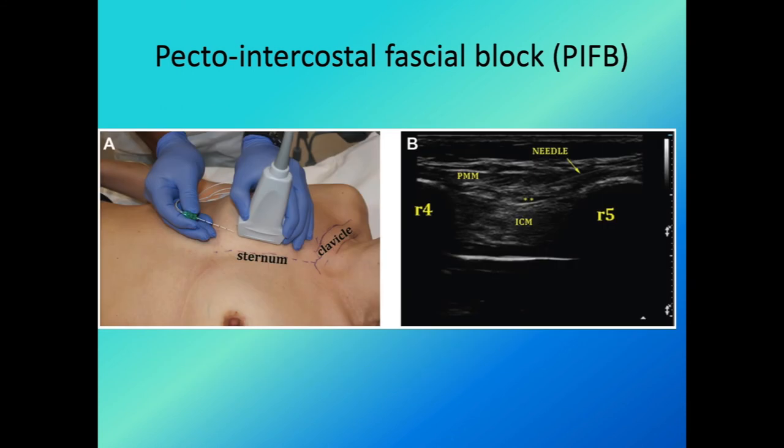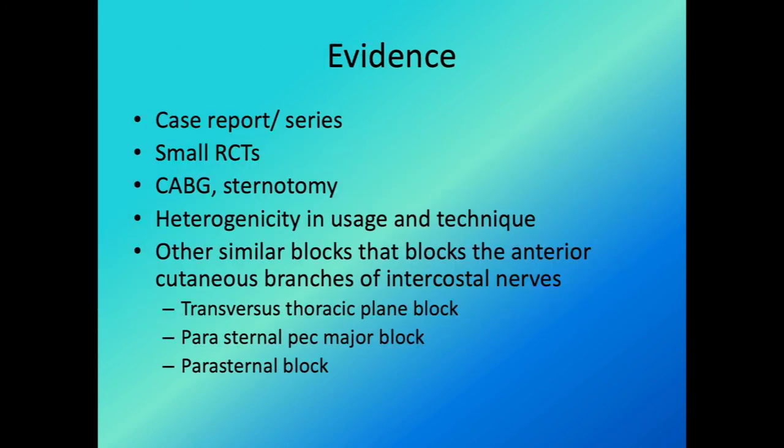The needle tip is placed between the pec major and the intercostal muscle. There is no strong evidence, but theoretically since the nerve runs through that area it should be a relatively simple and safe block. It can be considered as part of a multimodal strategy for CABG and sternotomy, though the extent of its clinical impact on practice remains uncertain.